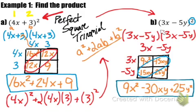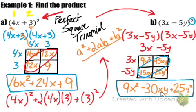Our a term was 3x and our b term was negative 5y. Looking at our product: 9x squared is (3x) squared — that works. Negative 30xy comes from 2 times 3 times negative 5, which gives negative 30, with xy attached. And finally, b squared: (negative 5y) squared gives positive 25y squared. The pattern a squared plus 2ab plus b squared is confirmed.